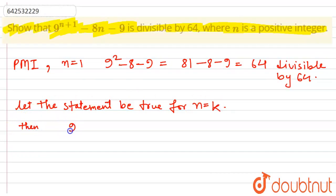Then, 9^(k+1) - 8k - 9 equals 64t, where t belongs to some natural number. That is t is some natural number.